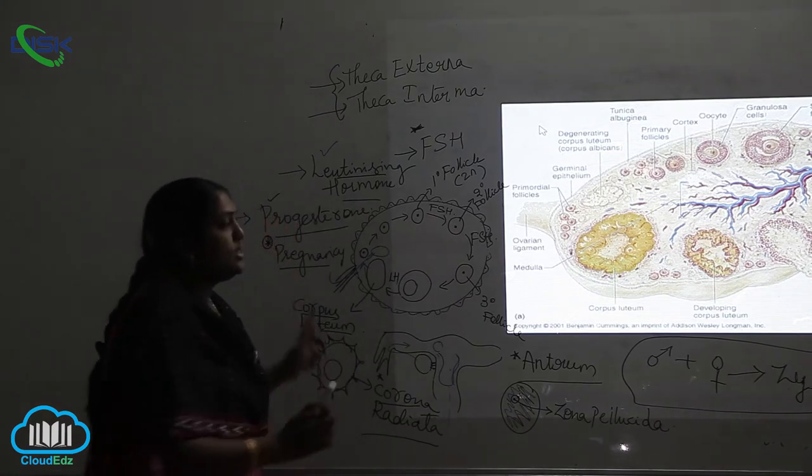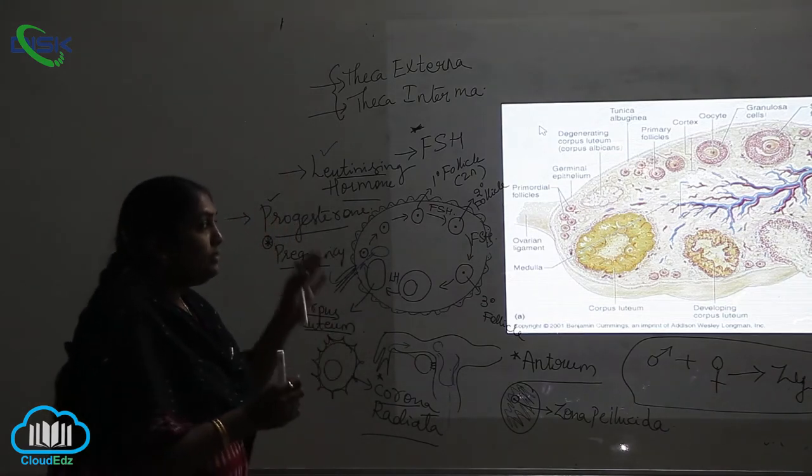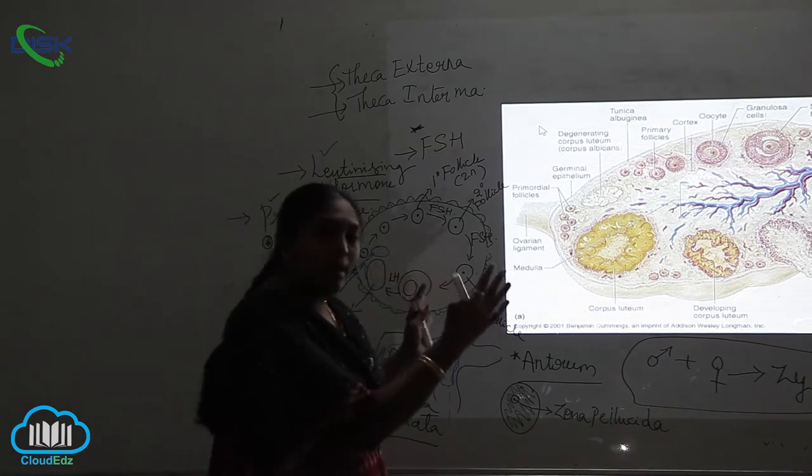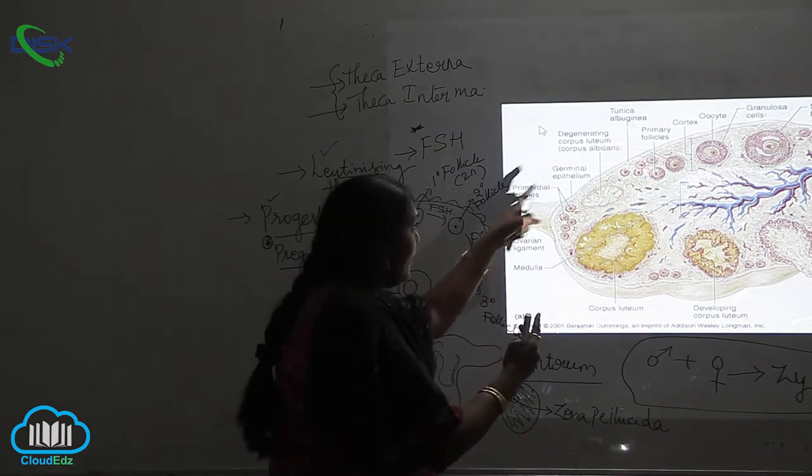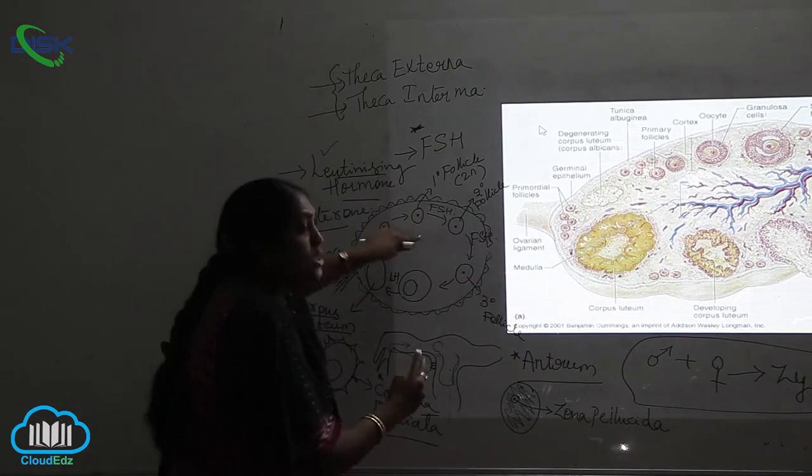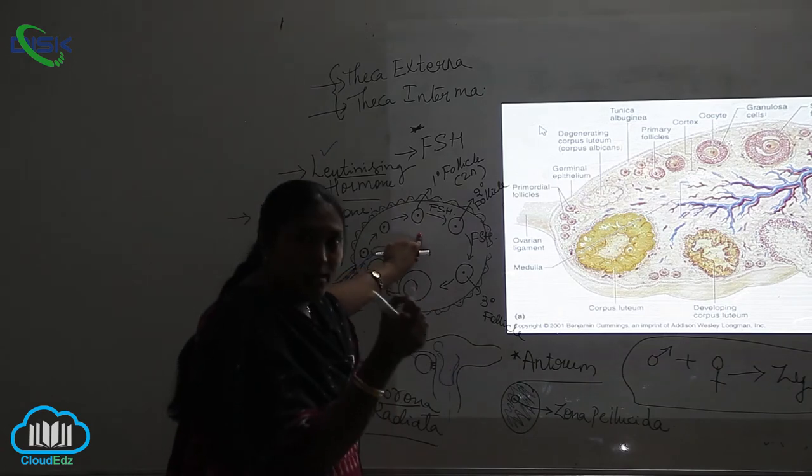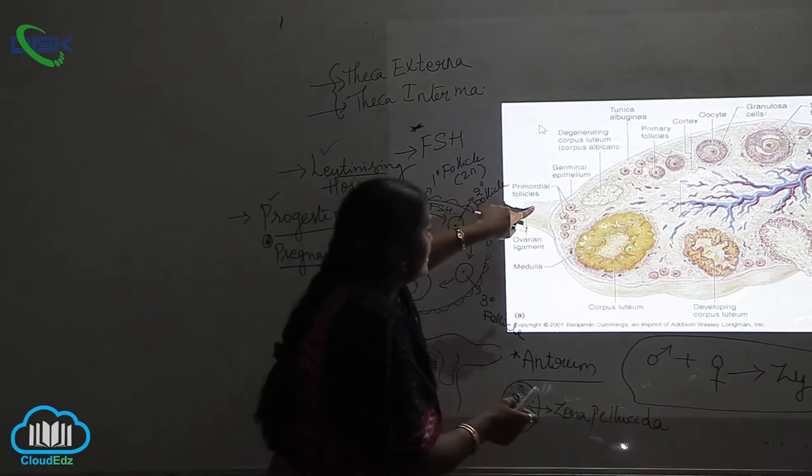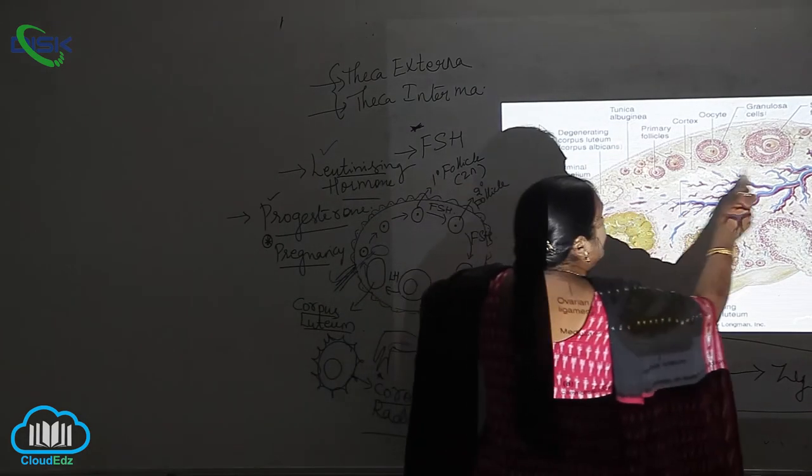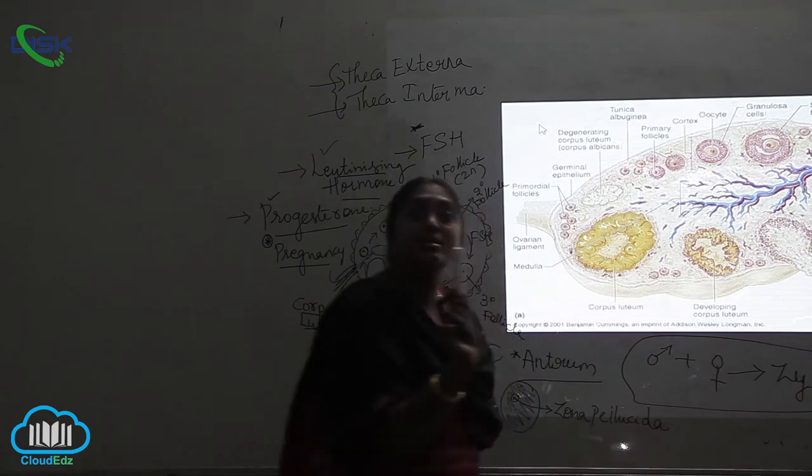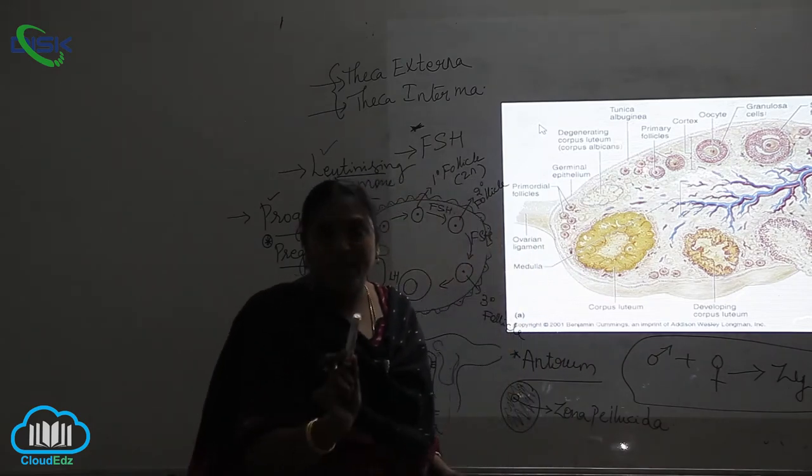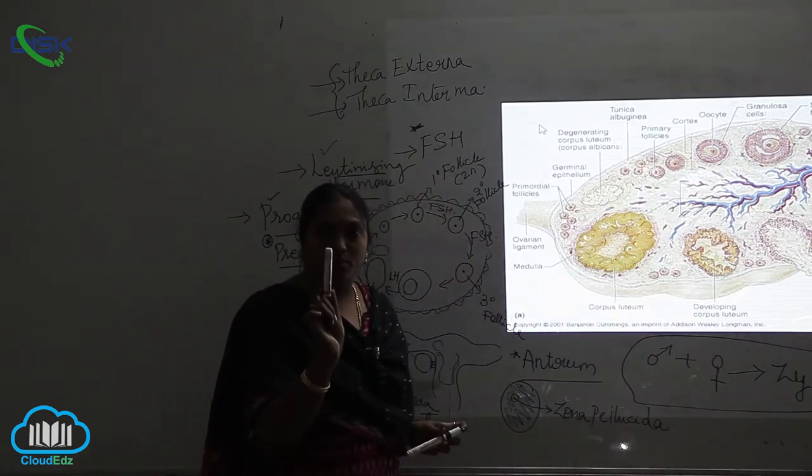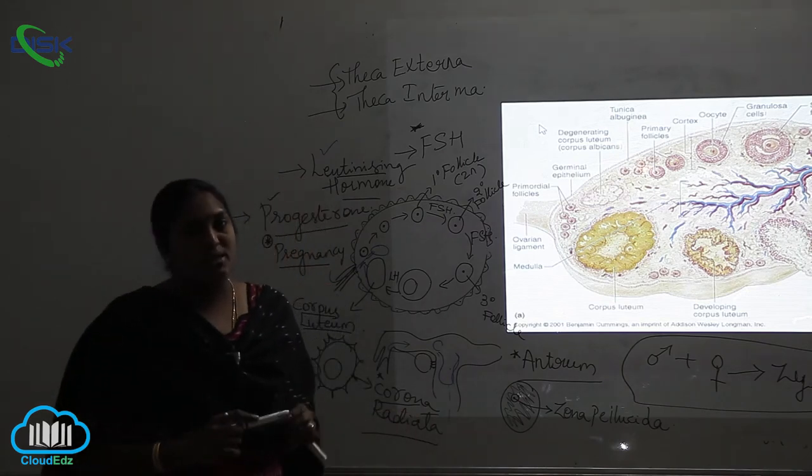This is the important thing which occurs in the ovary - the complete cycle of egg production from the follicles, the primordial follicles, to the formation of the egg. This complete cycle only happens in the presence of hormones released from the pituitary glands.